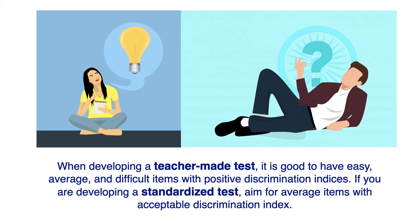Item difficulty is determined by computing the proportion of students who answered the item correctly. When developing a teacher-made test, it is good to have easy, average, and difficult items with positive discrimination indices. If you are developing a standardized test, aim for average items with an acceptable discrimination index. For both criterion-referenced and norm-referenced tests, items should fall within the average range of 0.26 to 0.75. Items with difficulty levels of 0.81 to 1.00 can still be included provided they undergo revision. Items that are too difficult to answer should be discarded.